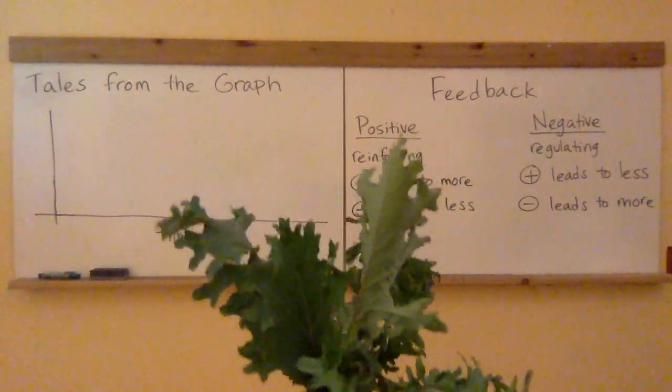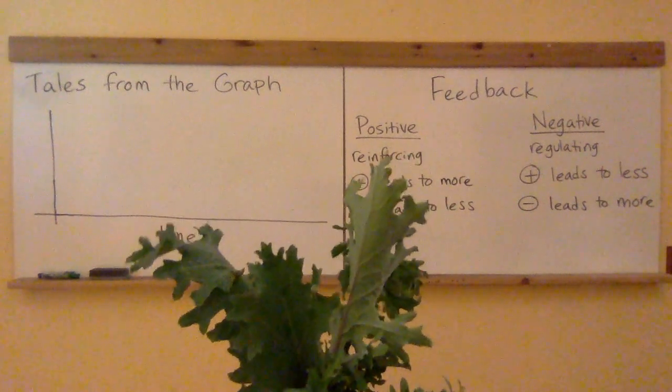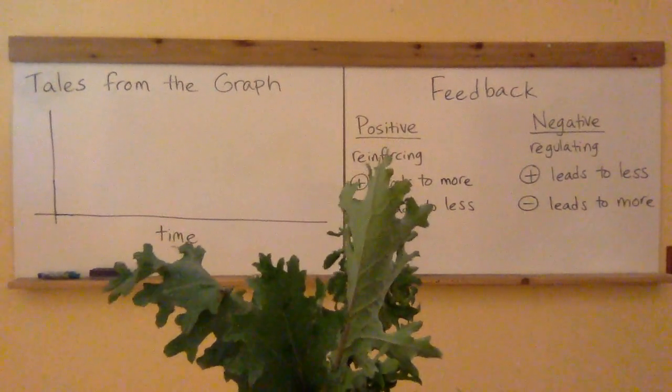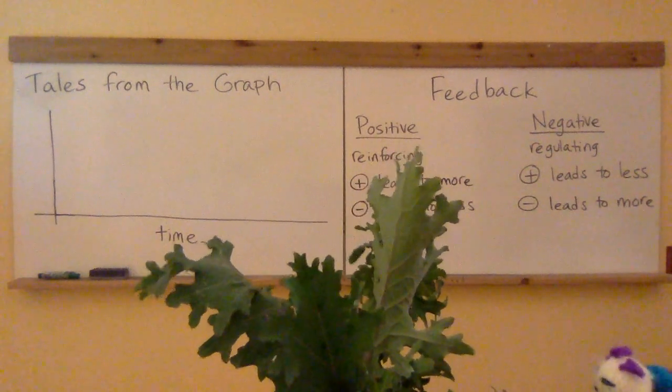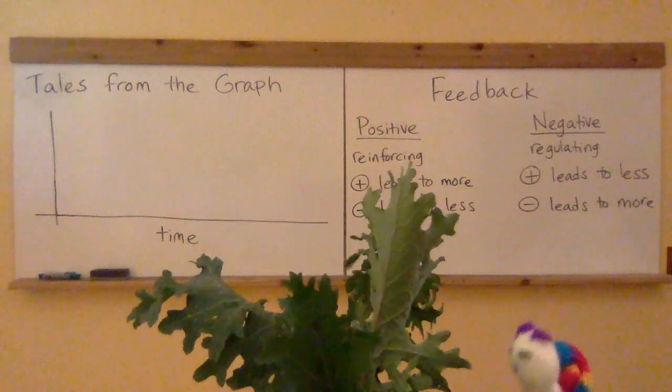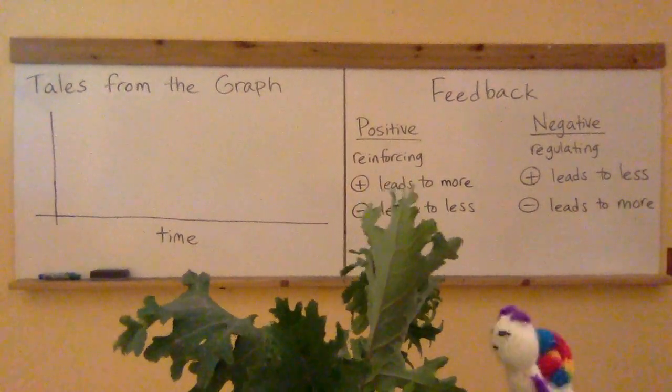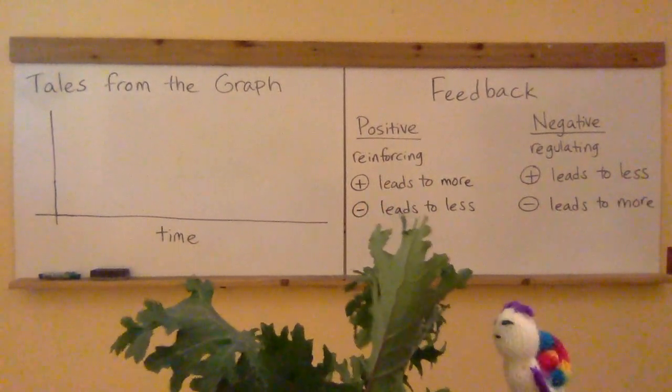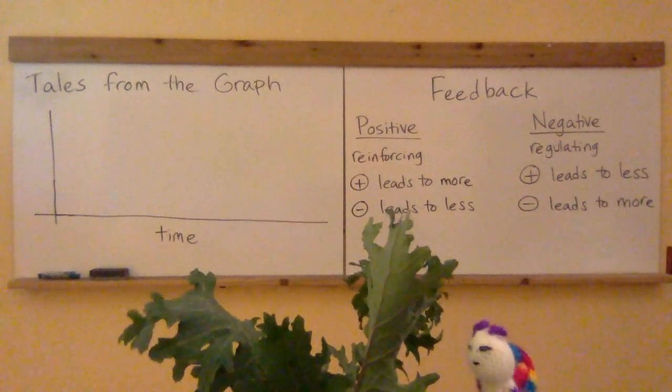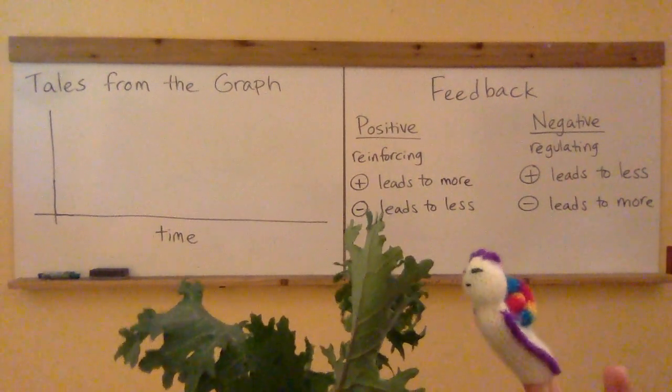Now once you get some kale another thing that tends to happen is that it attracts animals and humans that like to eat it and so once you have a good kale garden going along inevitably comes the snail. The snail's gonna eat the kale and it's gonna have a wonderful time and once it finds out how delicious it really is it's gonna call some of its friends over to enjoy the party.